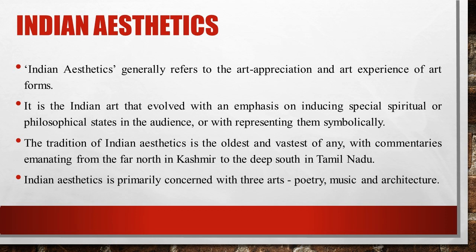The tradition of Indian aesthetics is the oldest and vastest of any, with commentaries emanating from the far north in Kashmir to the deep south in Tamil Nadu. Over time, Indian aesthetics theories have crossed disciplines and become useful to almost all researchers and scholars of the different arts and of literature. Indian aesthetics is primarily concerned with three arts — poetry, music, and architecture. Among these, poetry is considered to be the highest form of art, and drama is considered to be the highest form of poetry because the different experiences of life are best represented in drama.